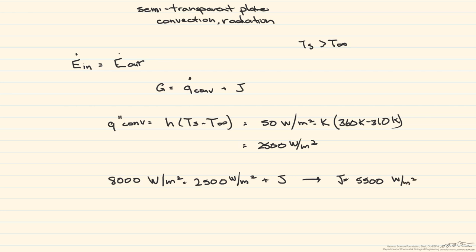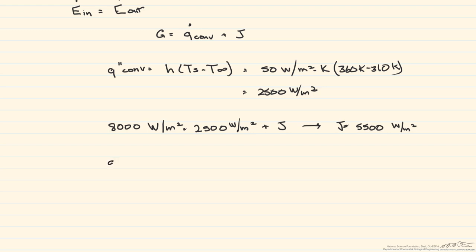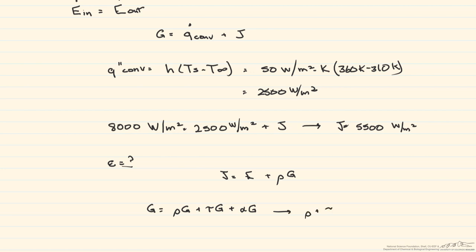So is this plate a black body? If there is an emissivity less than one, then it is not. J consists of everything that leaves the surface: the emissive power E plus the reflected radiation. Since the plate is semi-transparent, we have reflected, absorbed, and transmitted radiation, so G equals reflected plus transmitted plus alpha-absorbed, and therefore rho plus tau plus alpha equals one.